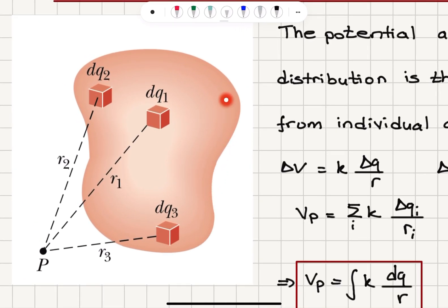Let's say that we have an arbitrarily shaped object which is charged and it has charge elements dq1, dq2, dq3, etc. Infinite number of charge elements. So each of these point charges will have a potential kqi over ri at point p.